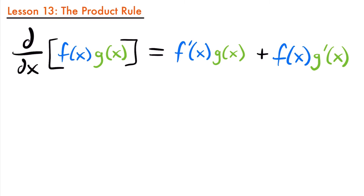Welcome back. The product rule is a rule that allows us to take the derivative of two functions multiplied together. If we have two functions f of x and g of x, we want to know what is the derivative of their product. It's not going to be as easy as multiplying the derivative of f of x times the derivative of g of x.